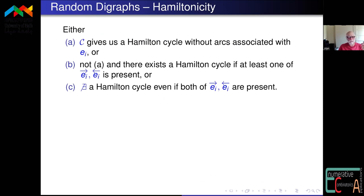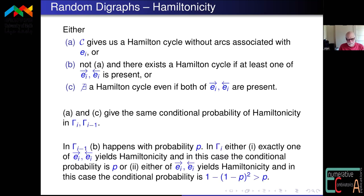The proof idea: condition on everything other than edge e_i. Either you have a Hamilton cycle regardless of e_i's status, or you don't regardless, or e_i matters. One checks that the chance of having a Hamilton cycle is greater in the directed case than the undirected case. The extra log log n in McDiarmid's result comes from needing minimum degree two in G(n,p), whereas in D(n,p) we only need minimum in-degree and out-degree one.